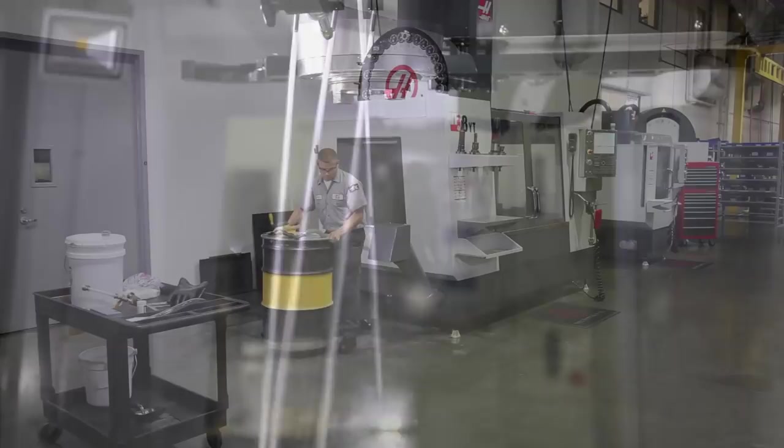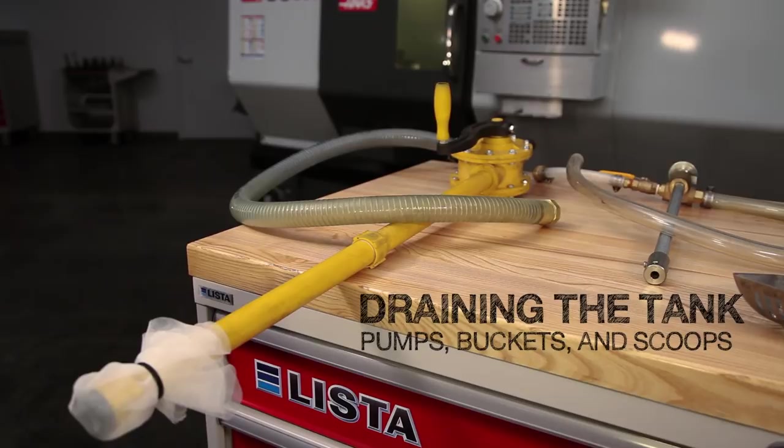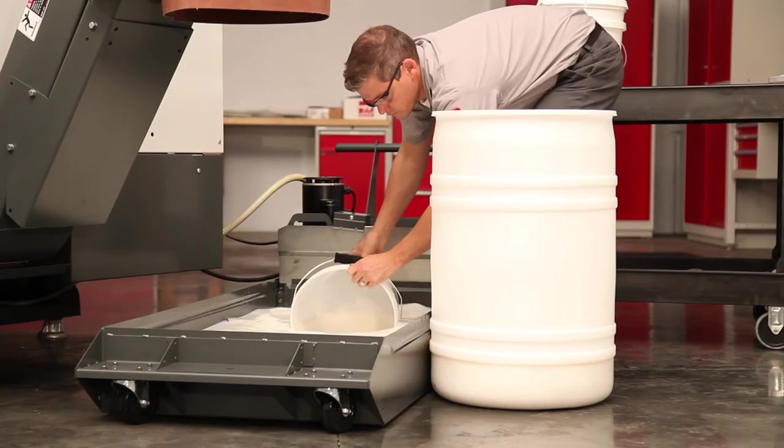When you need to drain the coolant in your tank, there are a number of ways to do this. The most readily available method, of course, is to use a bucket to bail the old solution out. This starts off easy, but it's difficult to get all the coolant out once the level is down below about 30% full.